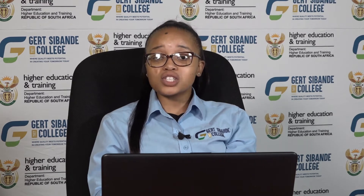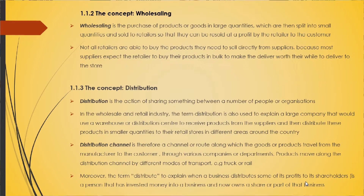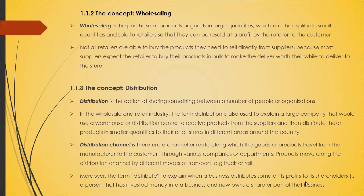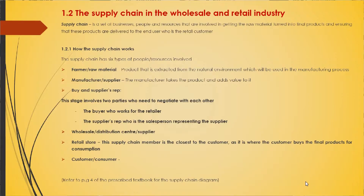We defined retail as the sale of goods or products to customers in small quantities for their own consumption and use. Wholesaling is the purchasing of products or goods in large quantities, which are then split into smaller quantities and sold to retailers so they can resell them to customers for a profit. Distribution is the act of sharing something between a number of people or organizations. We also looked at the supply chain — a set of businesses, people, and resources involved in turning raw materials into final products and delivering them to the retail customer.